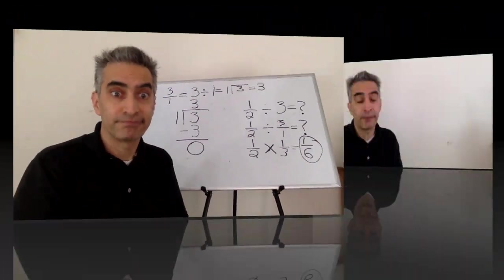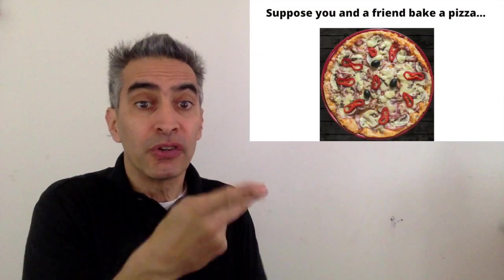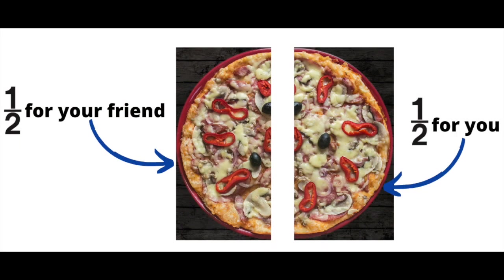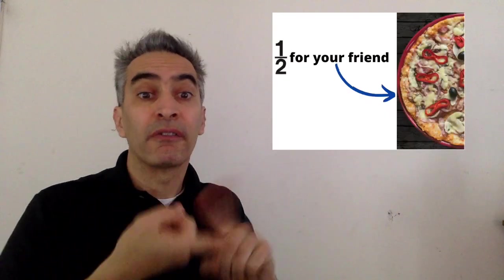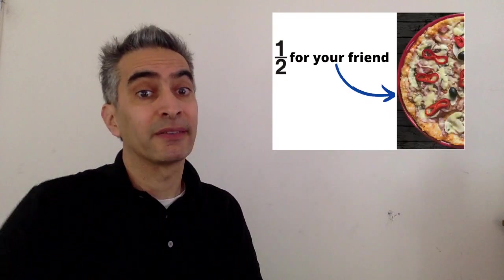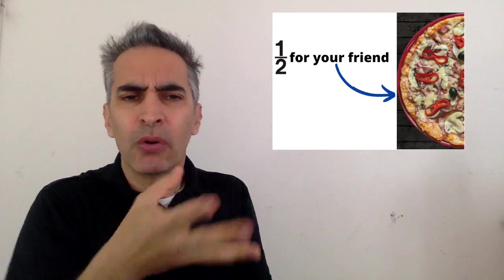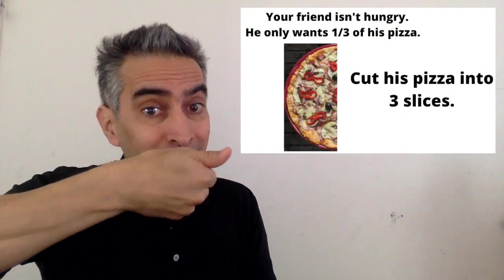Suppose you have a friend and the two of you bake a pizza. You and your friend split the pizza in half. This one half represents the amount of pizza your friend has. Your friend's not hungry. He only wants to eat one-third of his pizza.